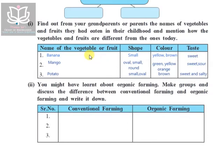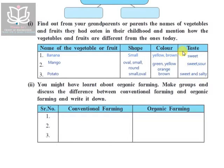The mango used to be oval, small, and round; the colors used to be green, yellow, orange, and sometimes reddish; and the taste was sometimes sweet and sometimes sour. Potatoes used to be small and oval, brown in color, with a taste somewhere between sweet and salty — not sour, but somewhere between sweet and salty.